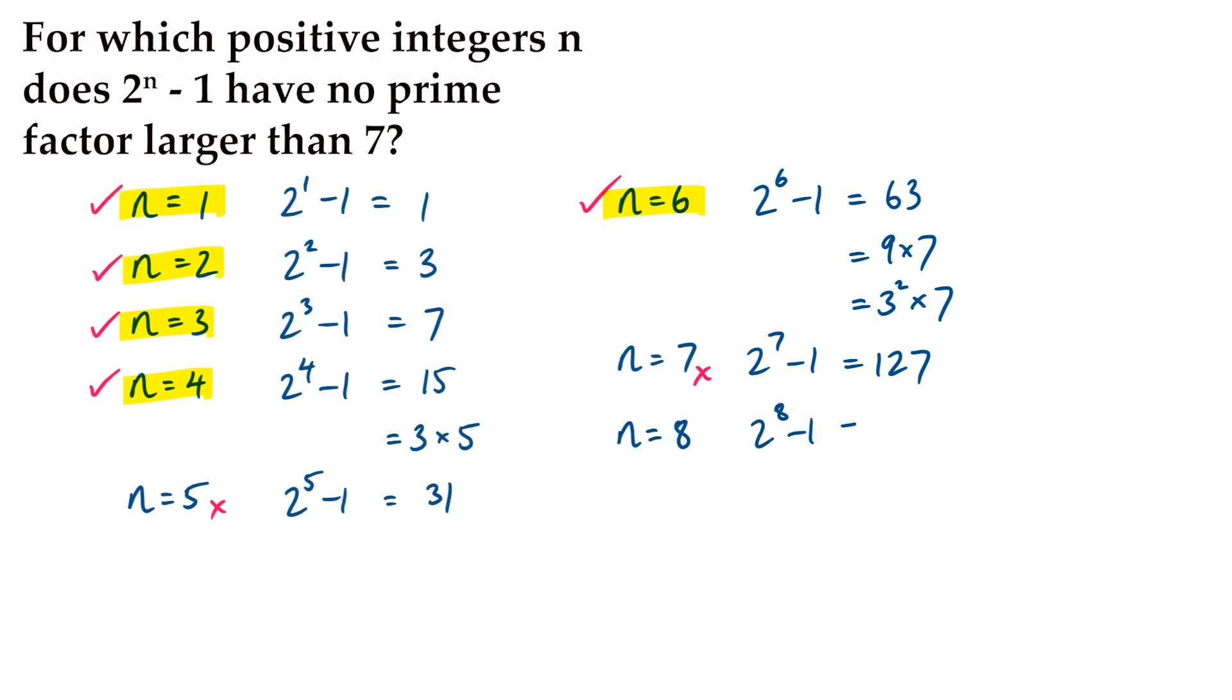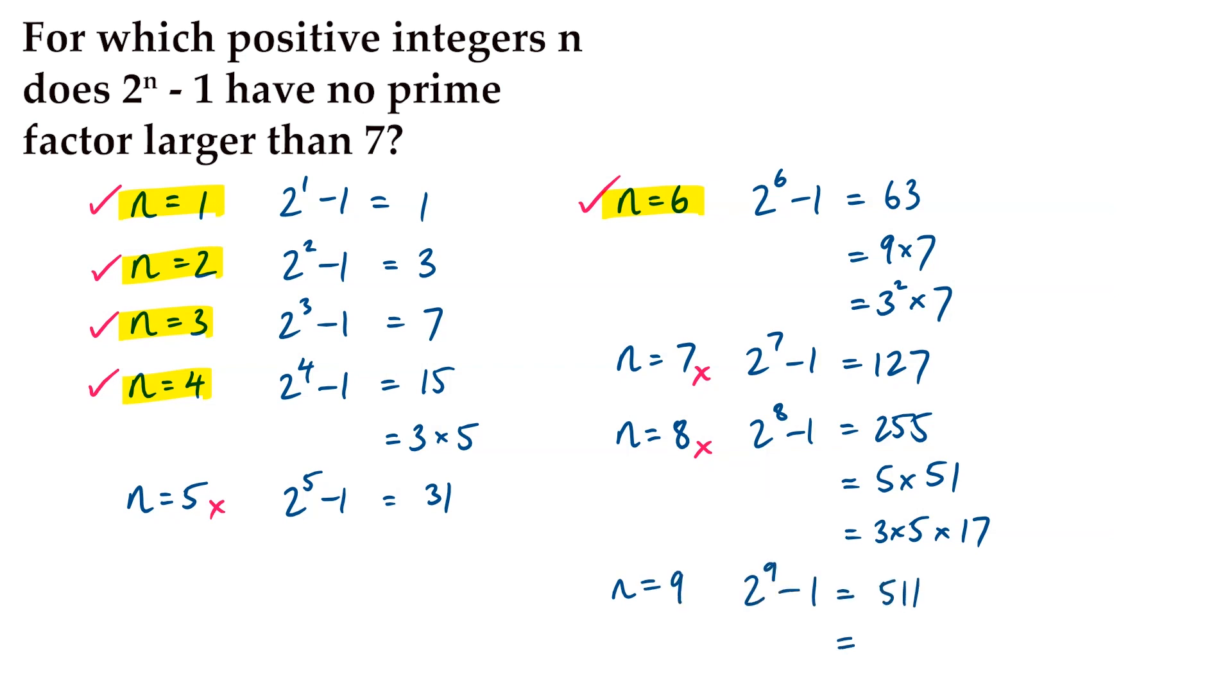2 to the 8 minus 1 is 255, which is of course divisible by 5. It's also divisible by 3. It's actually 3 by 5 by 17. Now, 17 is a prime larger than 7, so it's not in our solution set. Alright, last one. 2 to the 9 minus 1 is 511. I wonder if you can see which primes would go into 511. It's actually divisible by 7, and it's 7 by 73, which is prime, larger than 7, so no again.